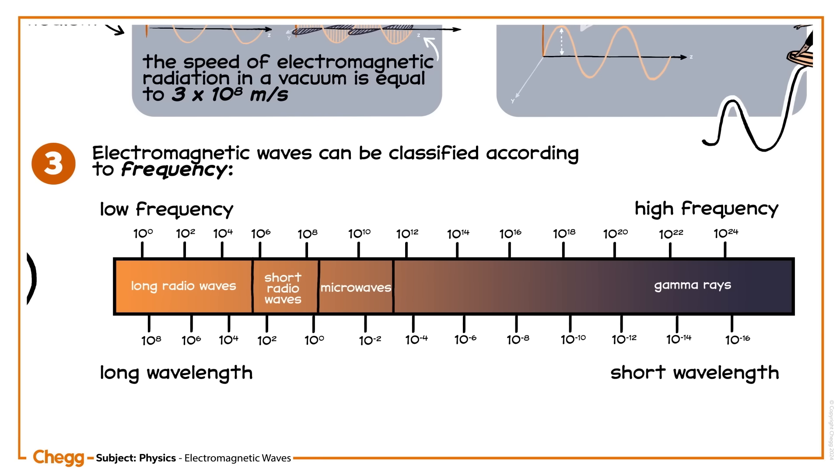Radio waves and microwaves on the left have lower frequencies. Visible light, the kind we can see with our eyes, makes up only a small fraction of the spectrum.